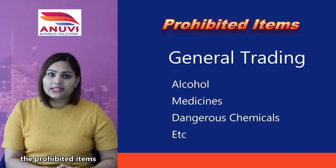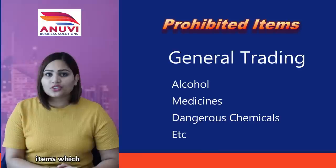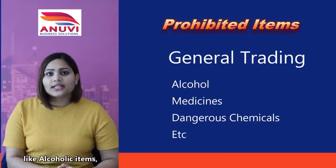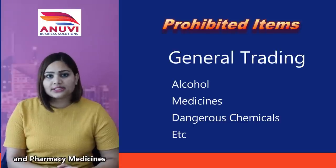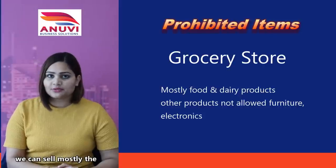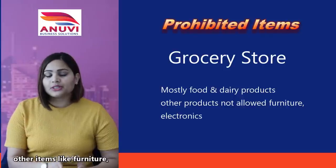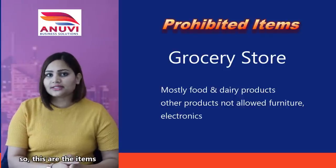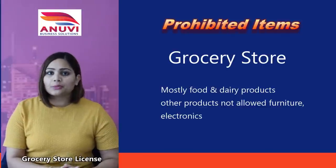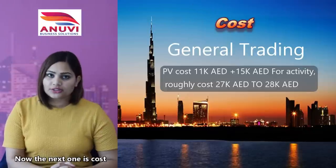Regarding prohibited items, under a general trading license, certain items are not allowed, such as alcoholic items, dangerous chemical products, and pharmacy medicines. Under a grocery store license, you can sell food and dairy products, but you cannot sell other items like furniture, electronics, or cars. These are the items prohibited under the grocery store license.